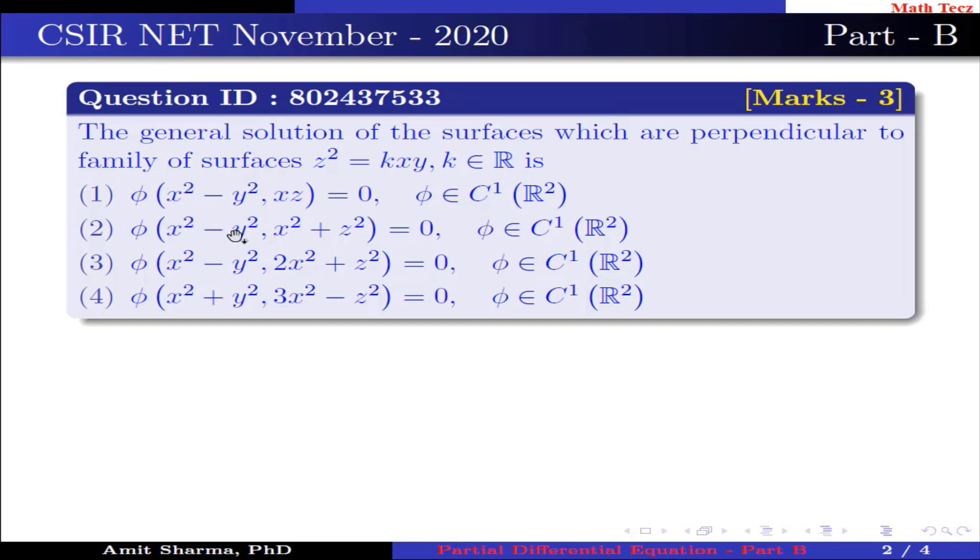Option 2: φ(x² - y², x² + z²) = 0, φ ∈ C¹(R²).